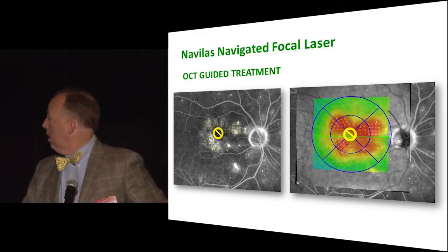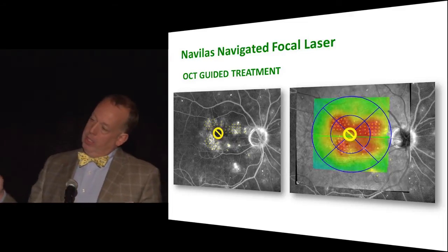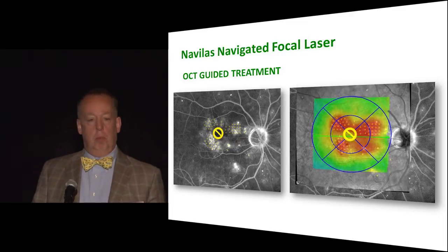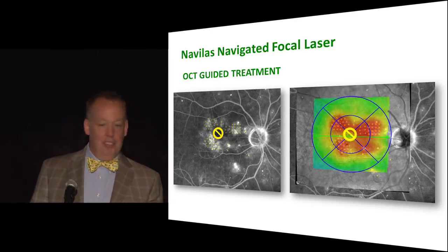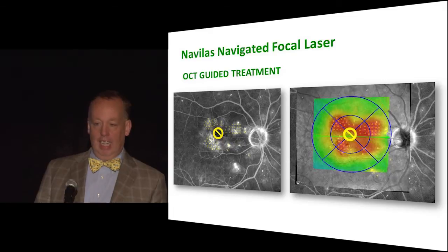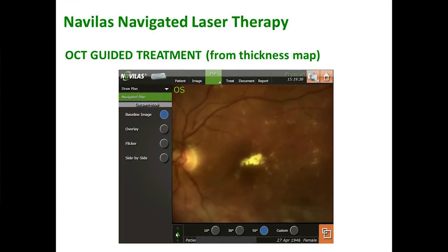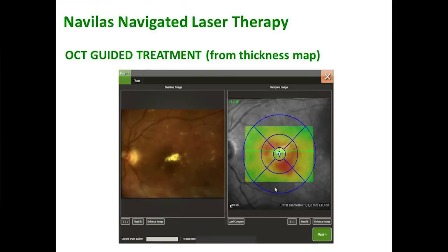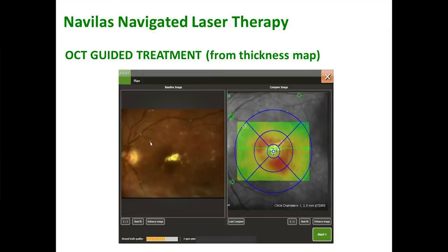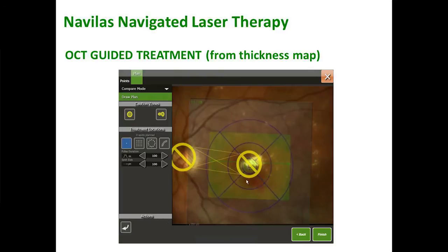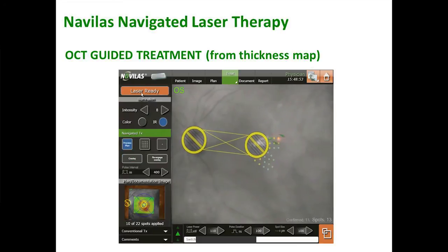More images showing the way you can do a pattern. When you put the fovea block on — in the US at least, and it may be different in Europe — you can actually move the laser and put spots there; it just gives you a visual indicator of where not to put the laser. Outside the US I believe it's a physical block. OCT-guided thickness maps allow you to plan your treatment, showing exactly where you want to go, and you can overlay exactly where you want to miss or where you want to put grid therapies.